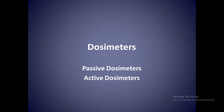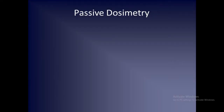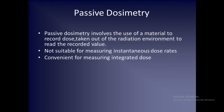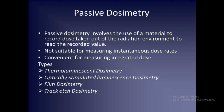Today we are going to discuss the different types of dosimeters, mainly passive dosimeters and active dosimeters. Passive dosimetry involves the use of a material to record dose and then take the material out of the radiation environment to read the recorded value. This method is not suitable for measuring instantaneous dose rates, but it is highly successful and convenient for measuring integrated dose.